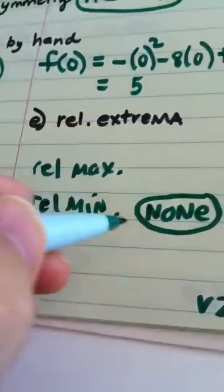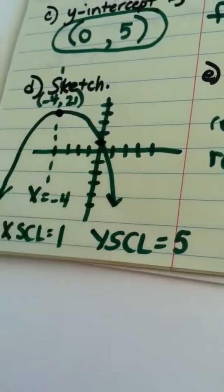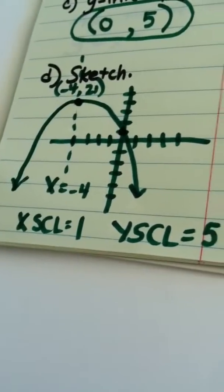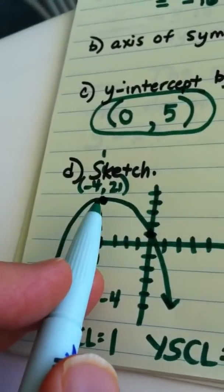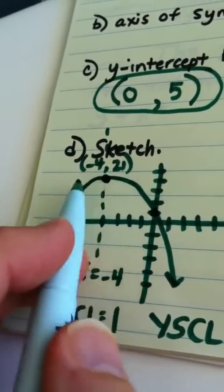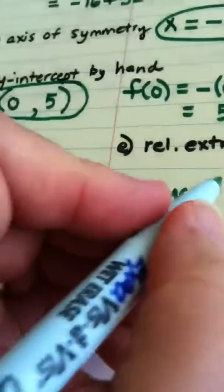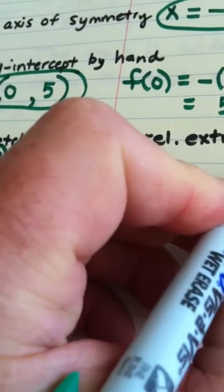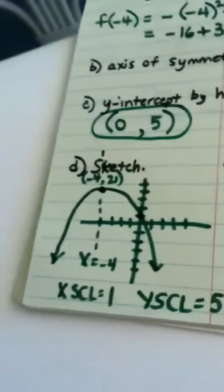Some of you I know on my past tests have written negative infinity, which I would give you credit for because you're telling me that the graph just drops off and never stops the y value. Relative maximum is the largest y value, and our largest y value here of course occurs at the vertex and that would be the number 21. And we're done.